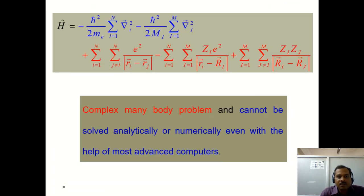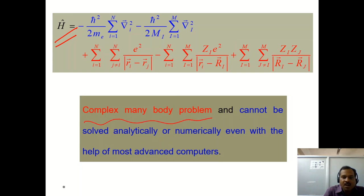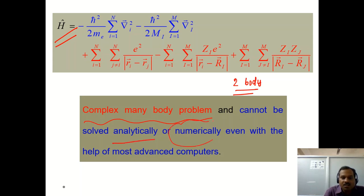This is a very complex Hamiltonian and it is a many-body problem. We know from basic quantum mechanics that only the two-body problem can be solved analytically — the classic example being the hydrogen atom — whereas it is numerically very difficult to solve this complex many-body problem, which involves around 10 to the power 22 equations.